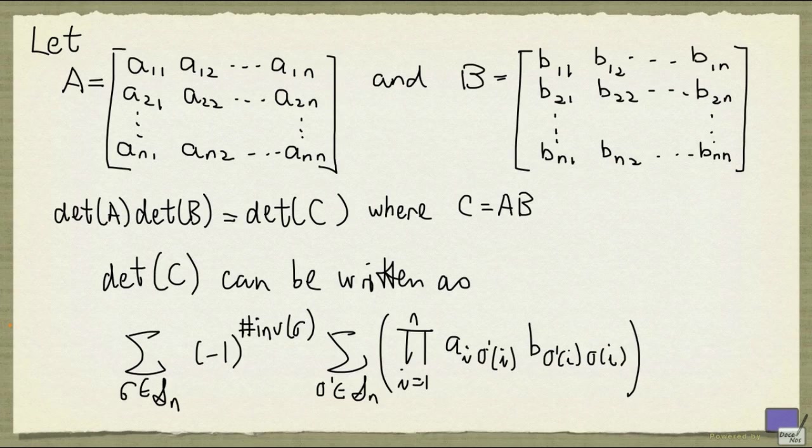We'll continue our discussion on the following result. If you have two square matrices A and B as shown here, then the determinant of A times the determinant of B is the same as the determinant of the product A and B.